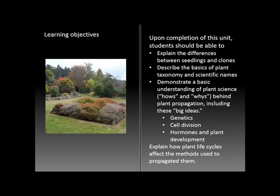Upon completion of this unit you should be able to explain the differences between seedlings and clones and their significance for the various types of propagation. We'll get into the basics of plant taxonomy and the scientific naming system developed by Carl Linnaeus, and we're going to get a very basic understanding of plant science — the hows and whys behind plant propagation — including the big ideas of genetics, various types of cell division, and the applicability of hormones and their importance in plant development.